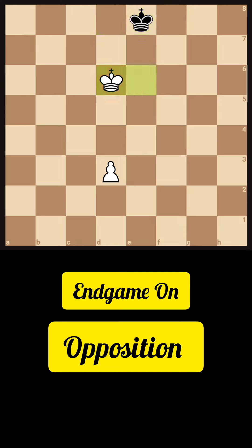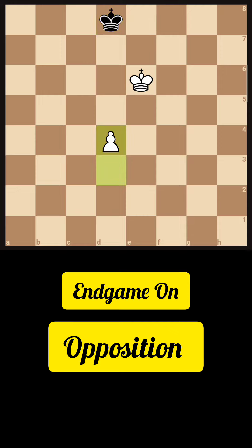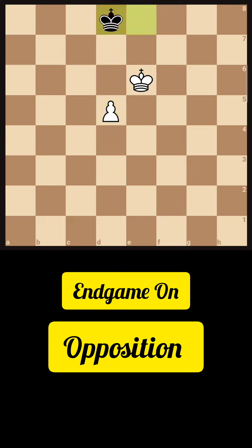Over here, another move was king to e6, king to d8, d4, king to e8, d5, king to d8, and king d6.